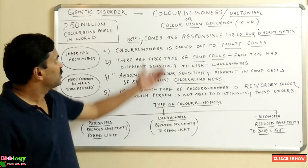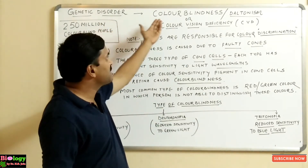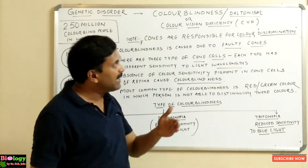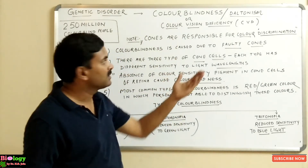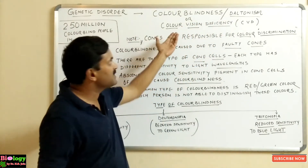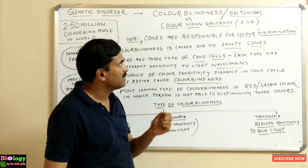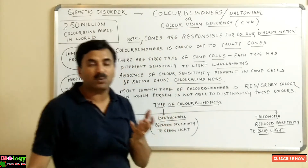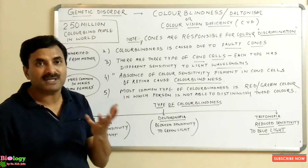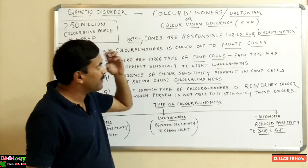Welcome, students. Today we are going to study a genetic disorder called colorblindness. Colorblindness is also named as daltonism and is also called CVD, that is, color vision deficiency. Let's have a look at what colorblindness is and what causes it.